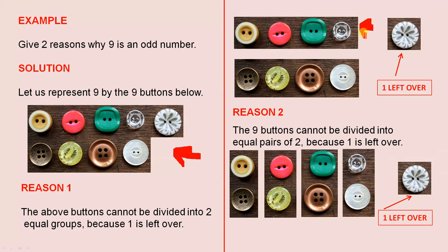Okay, you can have a group of four, you can have another group of four, but that's only eight. There is one left over. Because there is one left over, nine is odd.